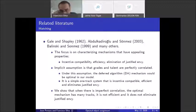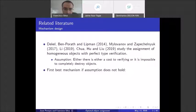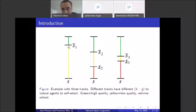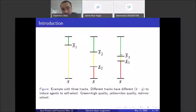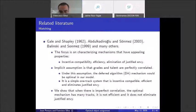Furthermore, the optimal mechanism might not be efficient and it certainly does not eliminate justified envy. This is easy to see: if a low type picks track one and has a grade slightly below the upper threshold of track one, while a high type picks track three and has a grade slightly above the lower threshold of track three but lower than the first student's grade, then the person on track one would have a higher score but receive a worse assignment. Our point is that focusing on efficiency and elimination of justified envy may come at the cost of welfare maximization.